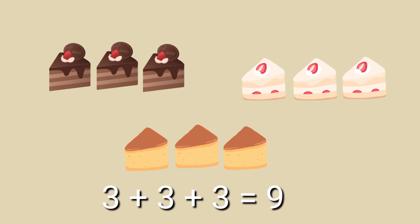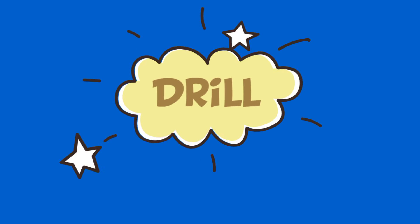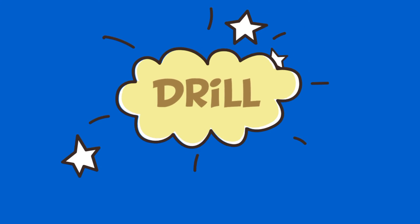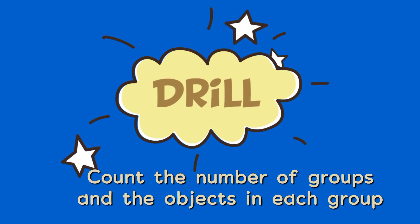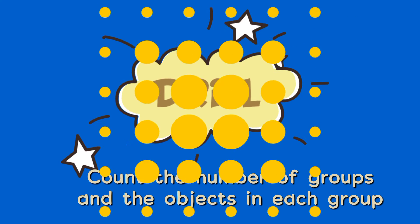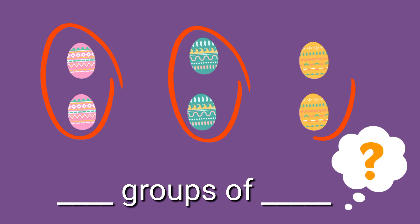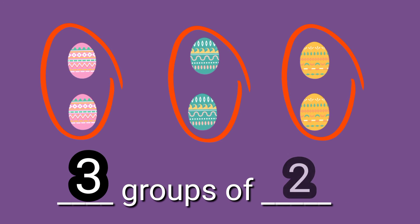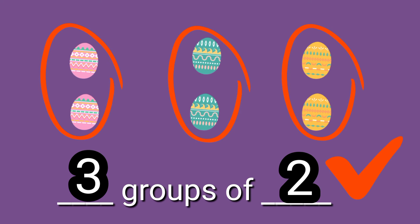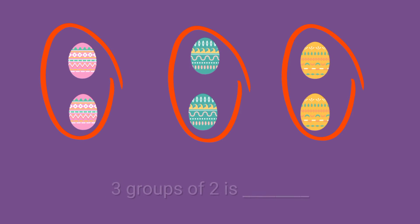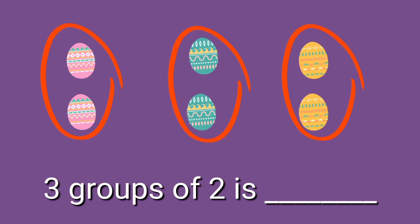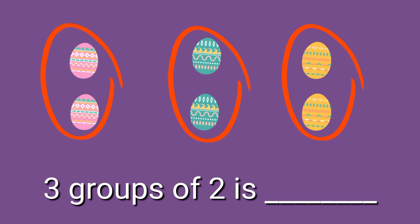Or three plus three plus three equals nine. Now it's time for a drill. Count the number of groups and the objects in each group. Three groups of two is six.